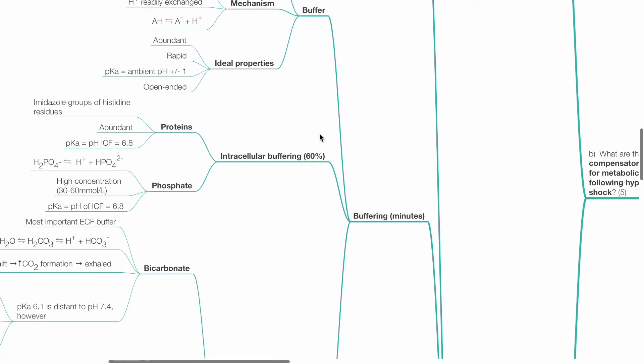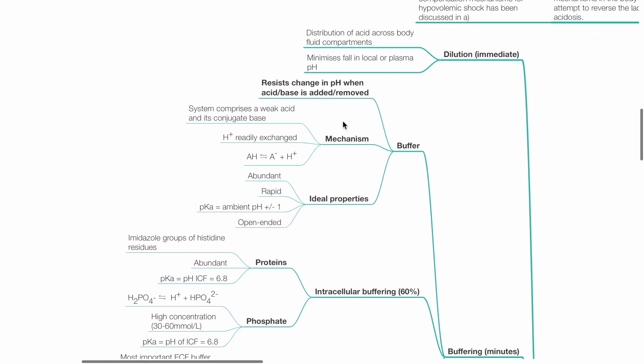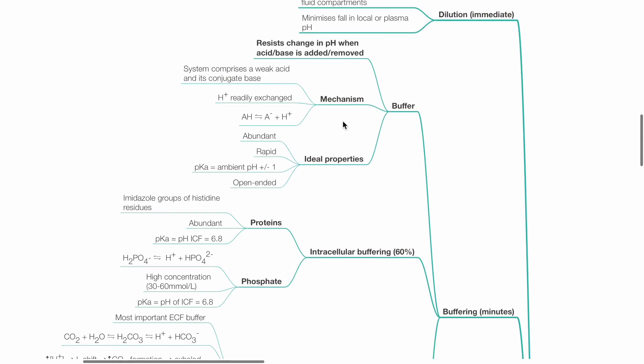Buffering occurs in minutes. A buffer resists change in pH when acid or base is added or removed. It consists of a weak acid and its conjugate base or a weak base with its conjugate acid. Hydrogen ion is readily exchanged. Ideal properties of buffer include abundant, rapid action, pKa equals ambient pH plus or minus 1, and being an open system.